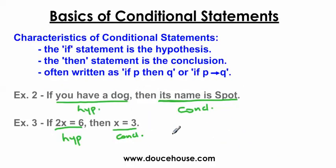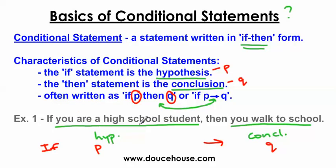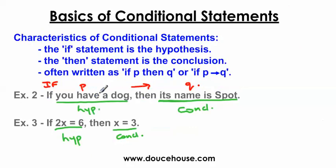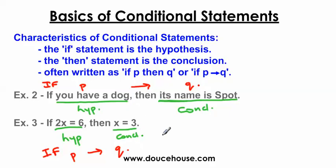Jumping to example two: the hypothesis portion is the P, and then we have the Q for the conclusion. If we look at these examples versus each other, the hypothesis is representing what P is, but the hypothesis is different in each problem. So P is just representing whatever you have as a hypothesis, and Q is representing whatever you have for the conclusion. For example three as well: the hypothesis is the P, and then the conclusion is the Q. P represents whatever the hypothesis is; Q represents whatever the conclusion is.